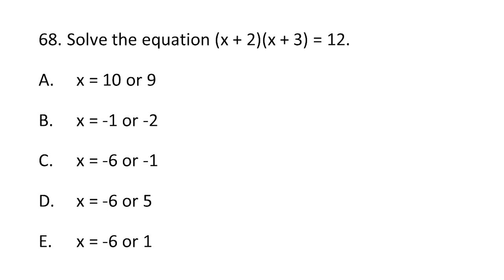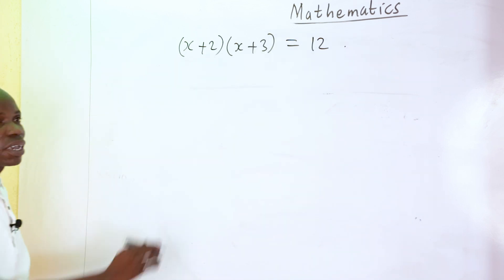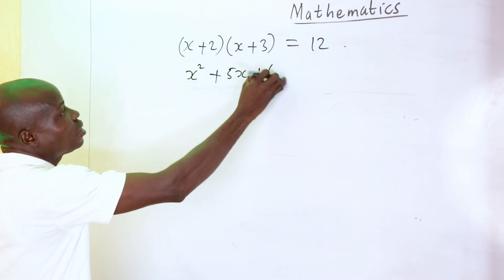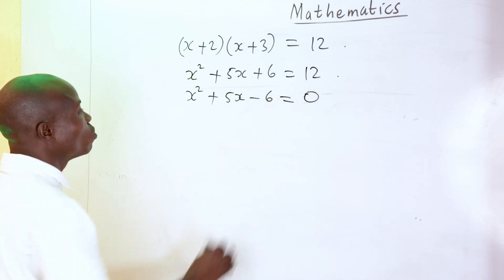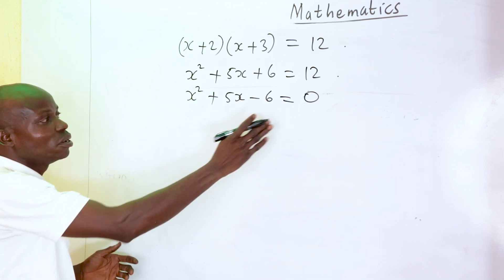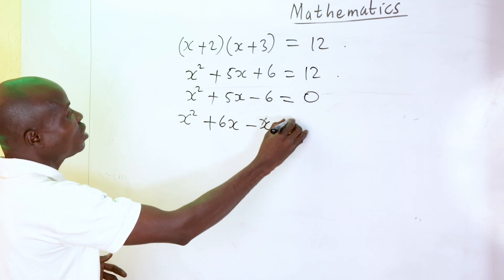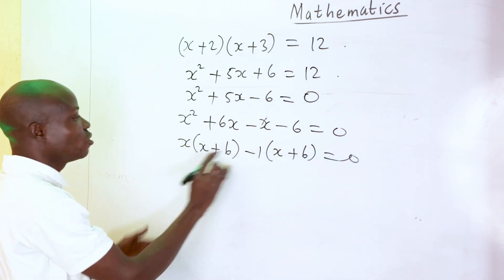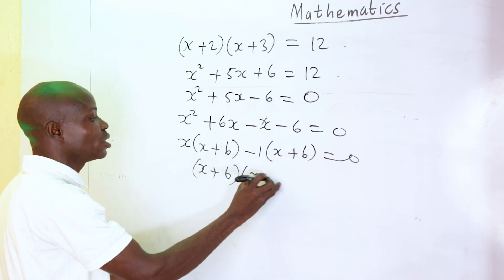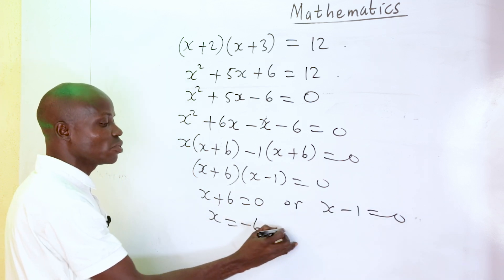Question 68: solve (x plus 2)(x plus 3) equals 12. Expanding gives x squared plus 5x plus 6 equals 12, so x squared plus 5x minus 6 equals 0. Factorizing: (x plus 6)(x minus 1) equals 0, giving x equals minus 6 or x equals 1. That matches option E.